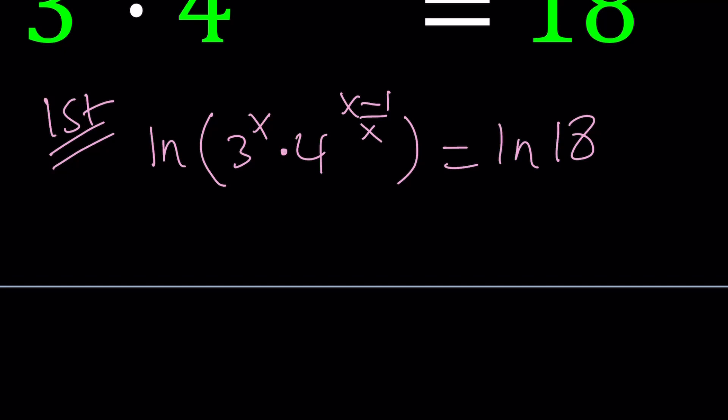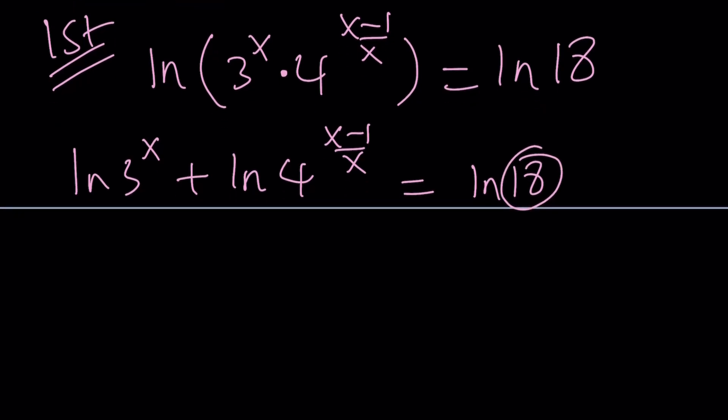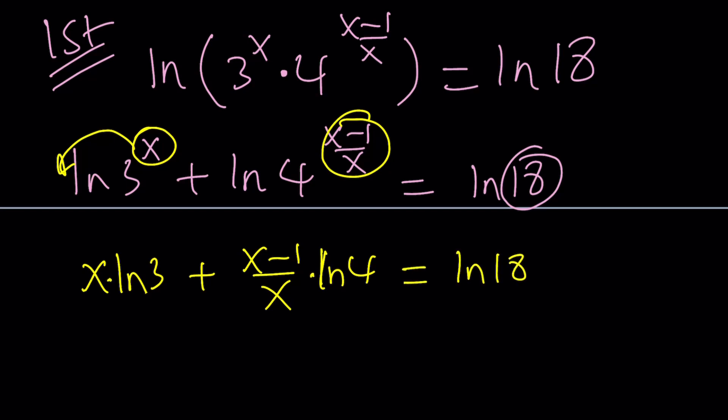We have the ln of a product, which can be written as the sum of two ln's. These are properties of logarithms. And then, of course, we can break down the 18 as well. We'll do that later. Let's go ahead and use power property here. The power property basically tells us that you can bring these down to the front like coefficients. This is going to become x ln 3. This is going to become x minus 1 over x times ln 4. Equals ln 18.